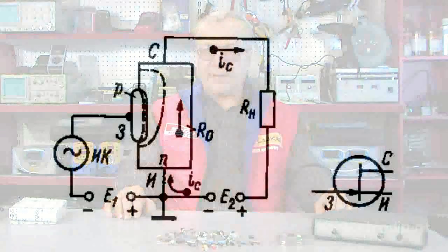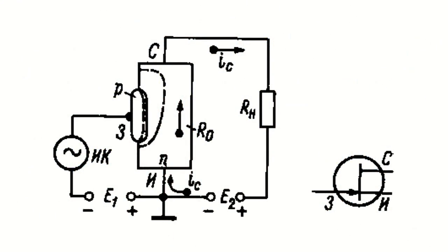Like bipolar transistors, field effect transistors can be wired according to one of three basic schemes. This chart shows the most widely used common source wiring scheme. The common source stage gives a very high current and power gain and reverses the voltage phase during amplification.